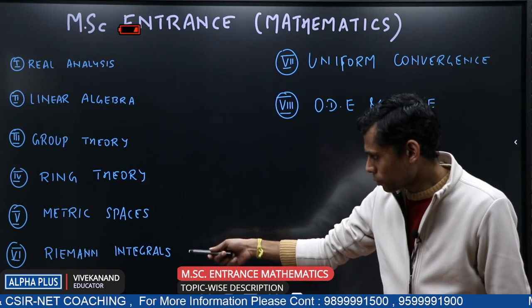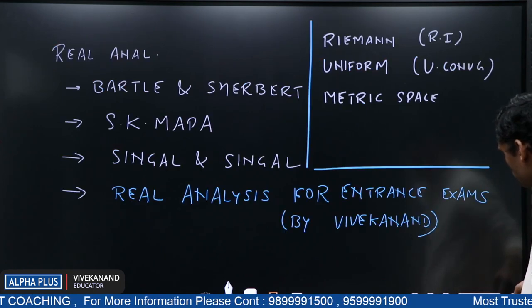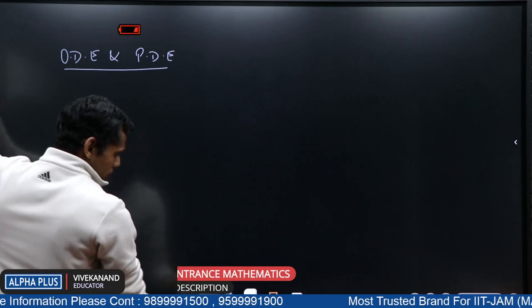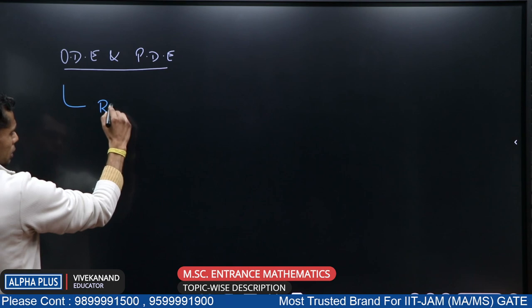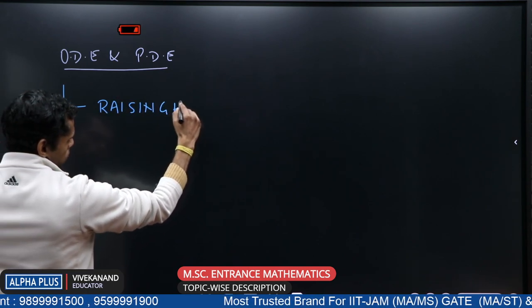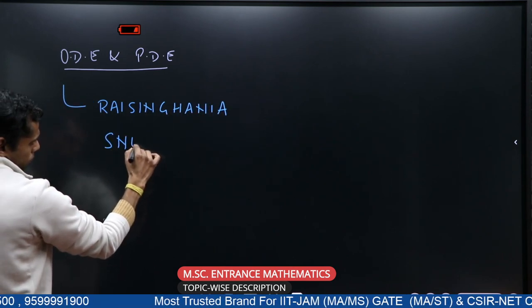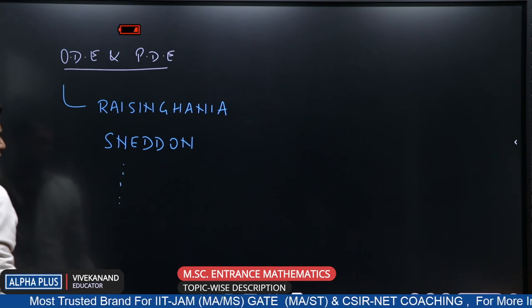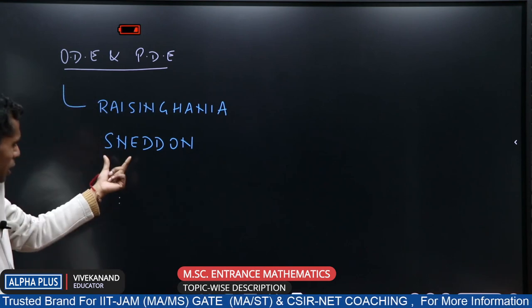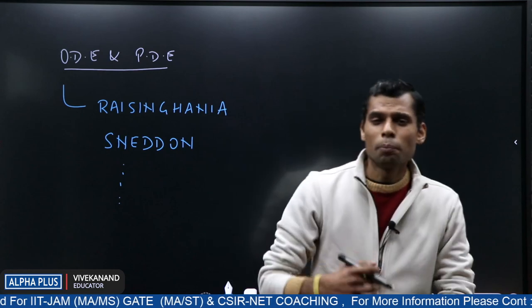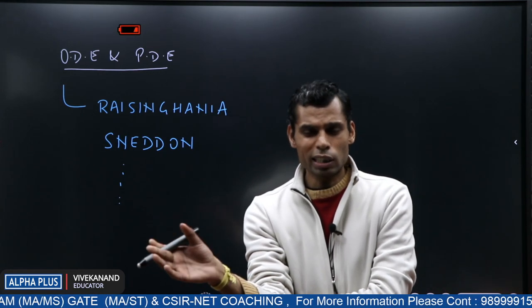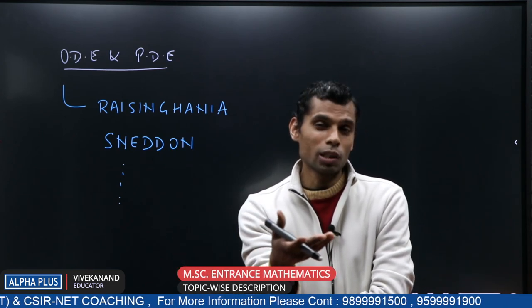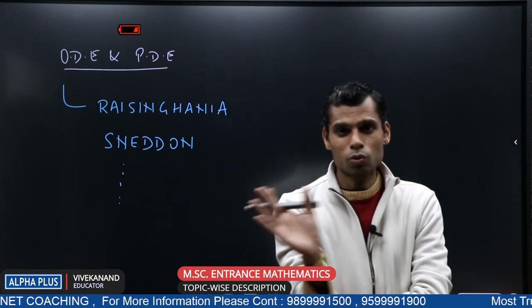Real Analysis done, Linear Algebra done, Group and Ring Theory done, Metric Space covered, Riemann will be there, Uniform Convergence will be there. Lastly, coming to ODE and PDE. For ODE and PDE there are many books — Ray & Singhania is one classic book, and Sneddon is another. Students usually complete the ODE portion but skip PDE. However, the exam setter gives more questions from PDE than ODE. ODE must be done first since PDE cannot be done without ODE — then move on to PDE.